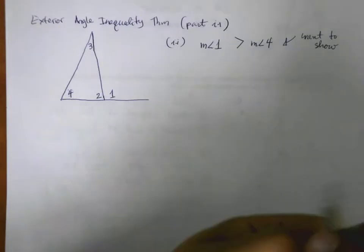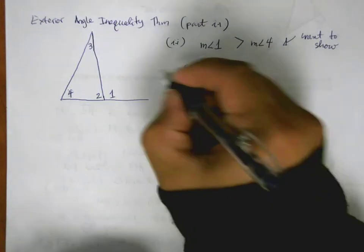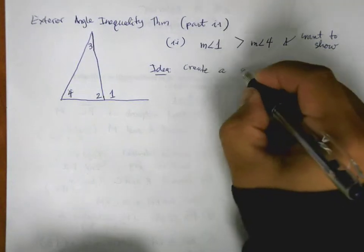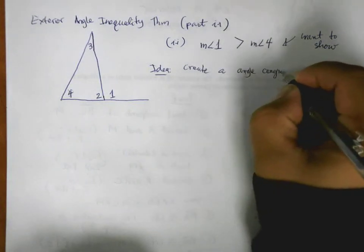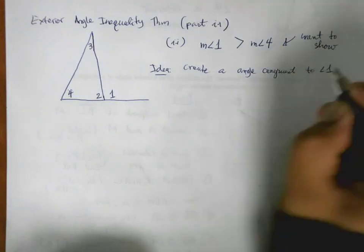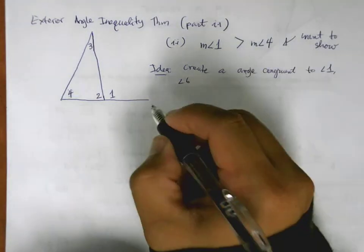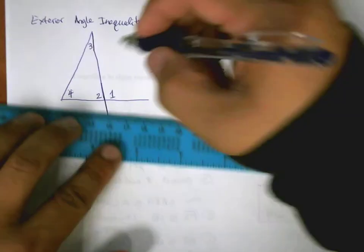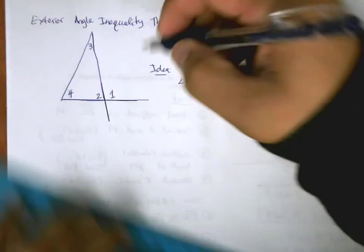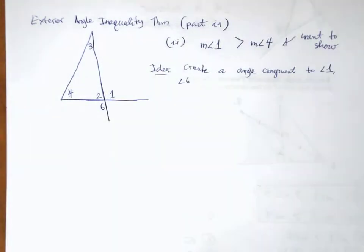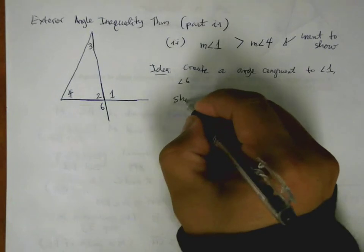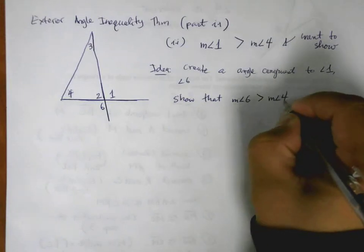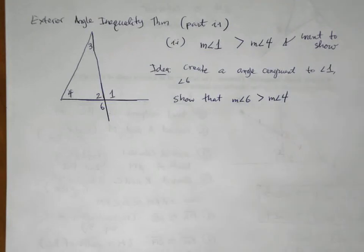This is the idea here. We are going to create, so this is the main idea, and it's nice to sketch this out a little bit. Create an angle congruent to angle 1. So we'll call this angle 6. Then show that the measure of angle 6 is greater than the measure of angle 4. And we're going to do a similar trick to what we did before.